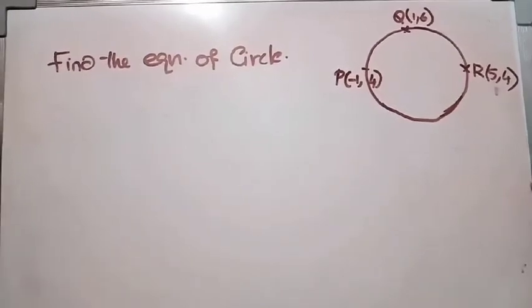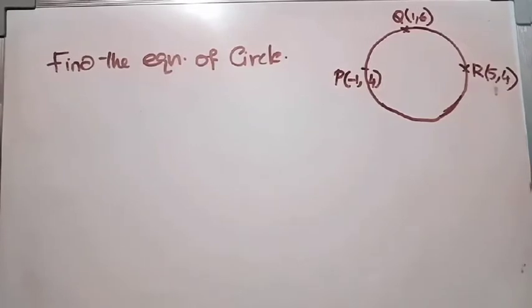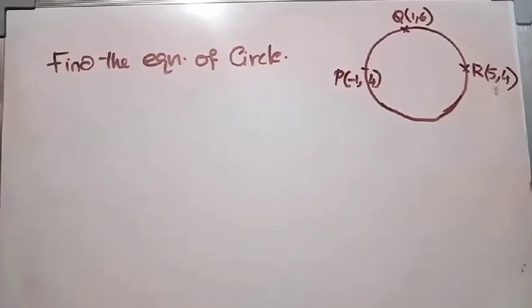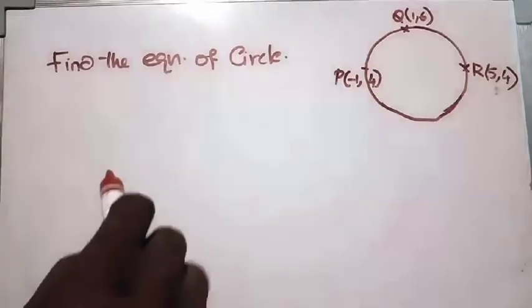This next question tests our real knowledge. Three points P(minus 1, 4), Q(1, 6), and R(5, 4) are on the circumference of a circle. We need to find the equation of the circle, which requires the center and the radius — but neither is mentioned here. We'll find the center of the circle using the concept of the perpendicular bisector of a chord.